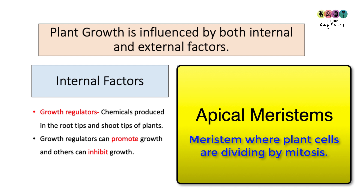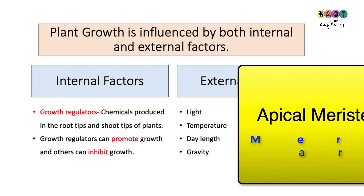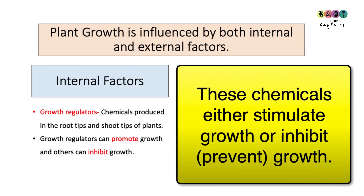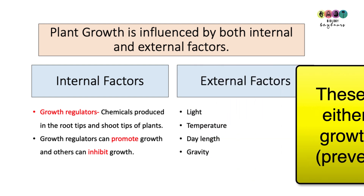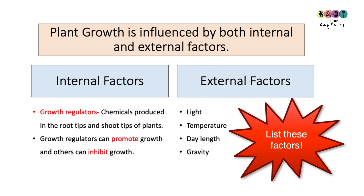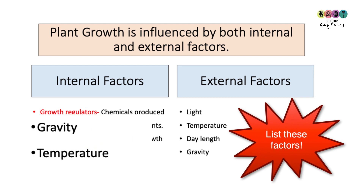A meristem is a region of the plant where the cells are dividing continuously by mitosis. Growth regulators can promote growth — stimulating it to happen — or they can inhibit it. The external factors are light, temperature, day length, and gravity. It's important that you can list those four.